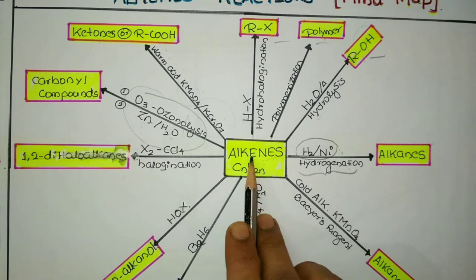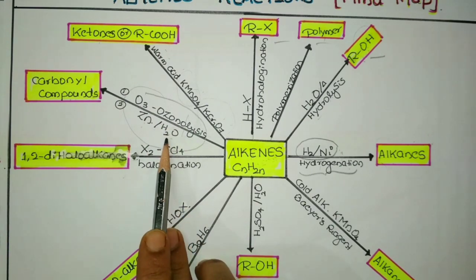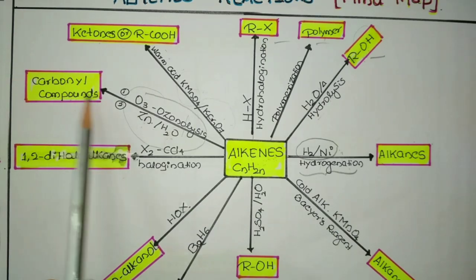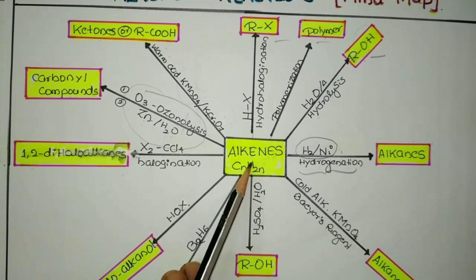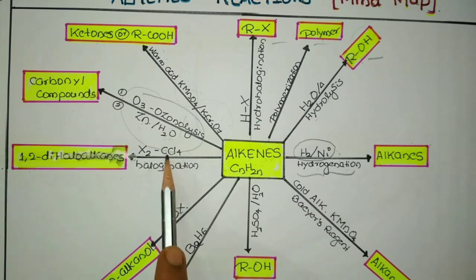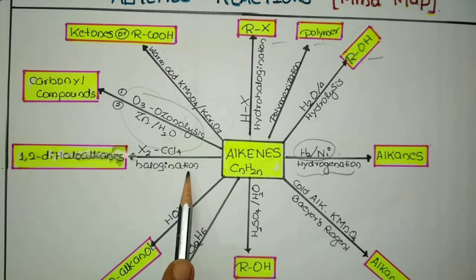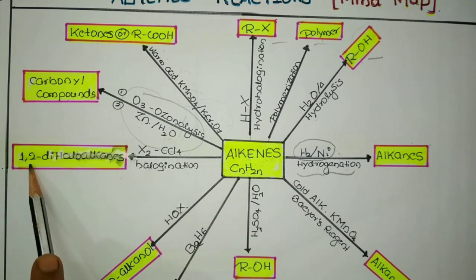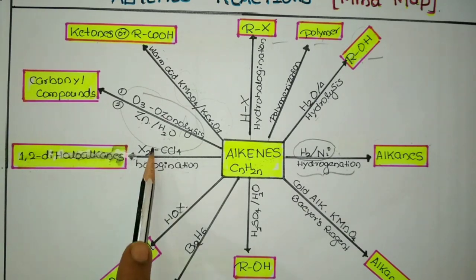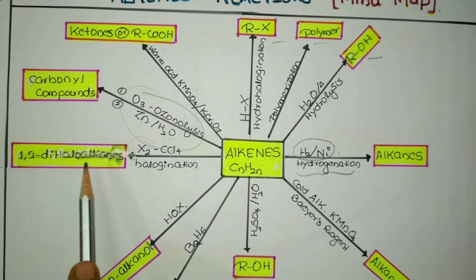In exam questions, if an alkene is given with ozone and zinc/water as reagents, the product should be either an aldehyde or a ketone. When alkenes are treated with a halogen in the presence of carbon tetrachloride as solvent, they undergo halogenation — the halogen adds across the double bond to give 1,2-dihaloalkane, where both halogens are added to the alkene carbons.